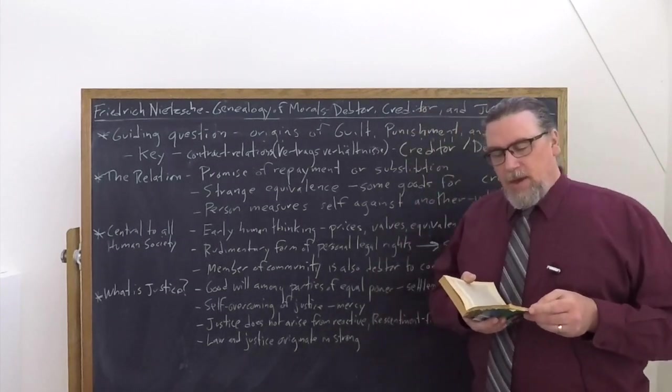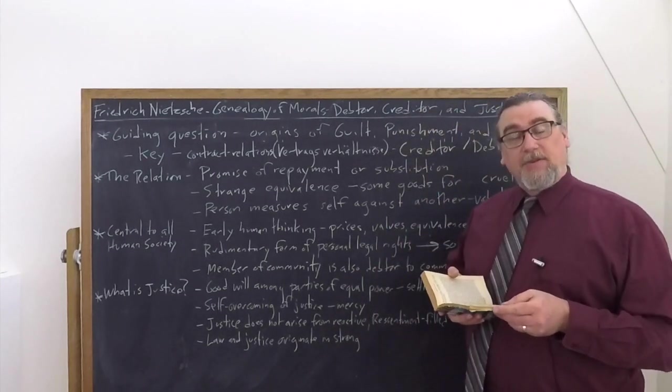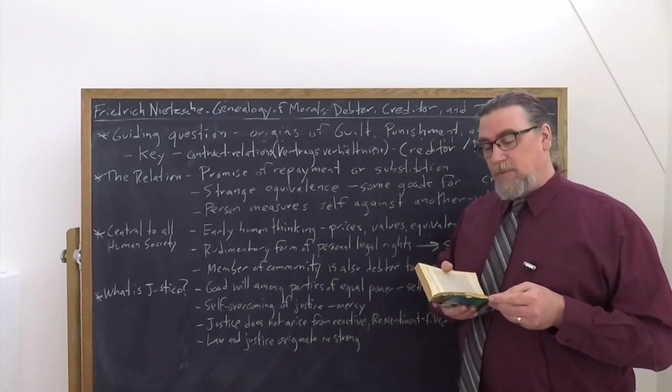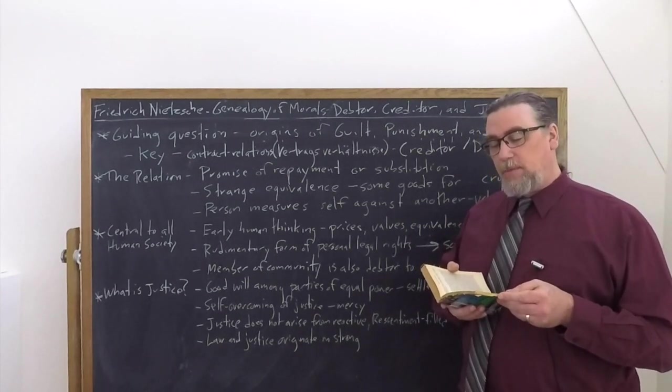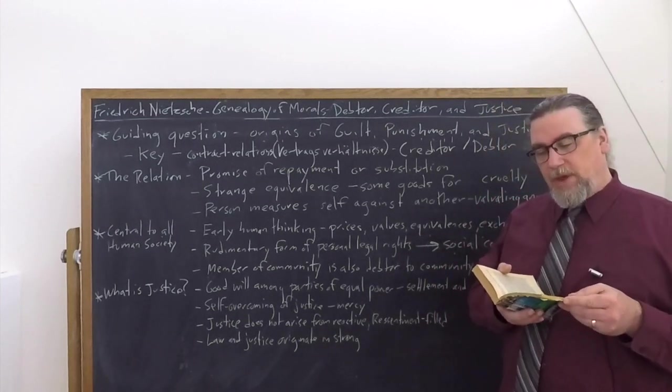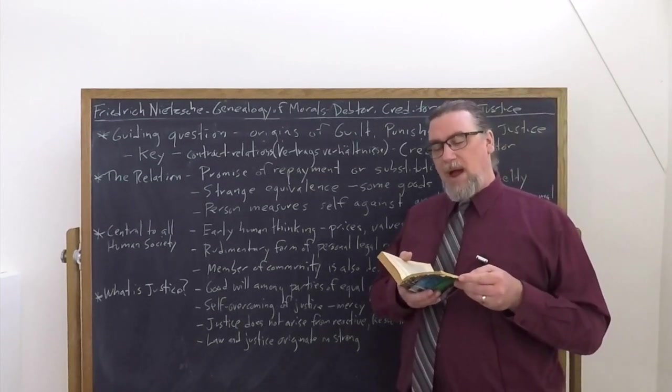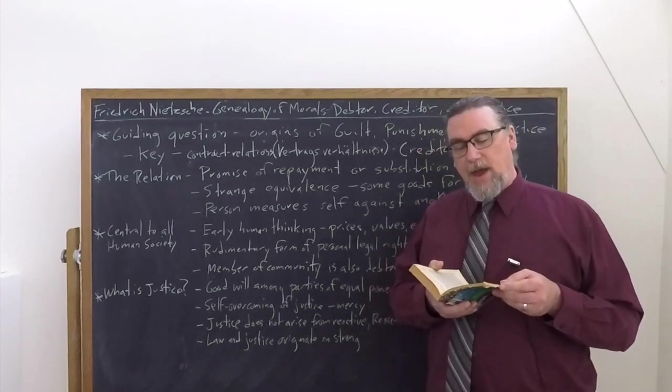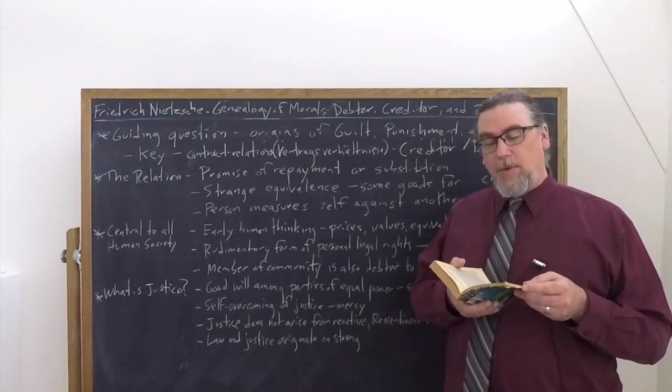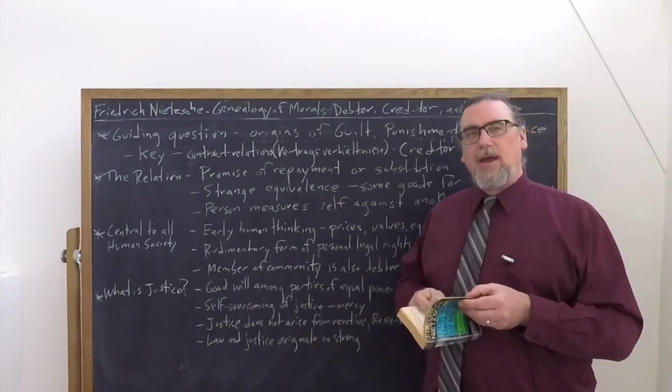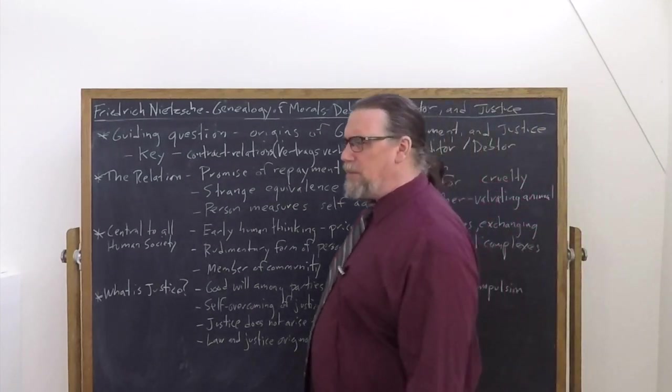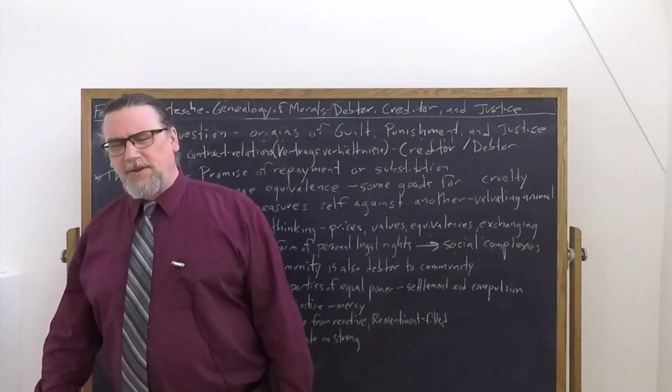He goes on and he says, in punishing the debtor, the creditor participates in a right of the masters. So the creditor is allowed to take on the mask, the position of the strong in this primary valuation and do whatever they want to do to the person who's placed in the weaker position, the common person, the person who's no good, who's not measuring up to the debts that they have taken on.